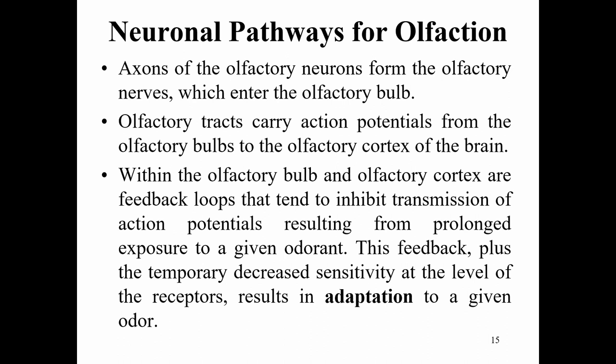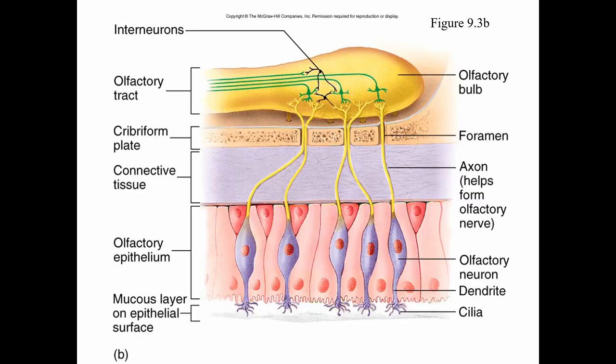For the neuronal pathways of olfaction, axons of olfactory neurons form the olfactory nerves, which enter the olfactory bulb. Olfactory tracts carry action potentials from the olfactory bulbs to the olfactory complex of the brain. Within the olfactory bulb and complex are feedback loops that inhibit transmission of action potentials resulting from prolonged exposure to a given odor. This feedback, plus temporary decreased receptor sensitivity, results in adaptation — that is why you tend to smell your perfume less after a few minutes.